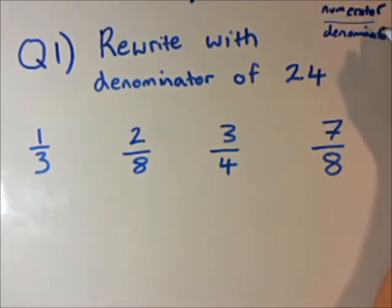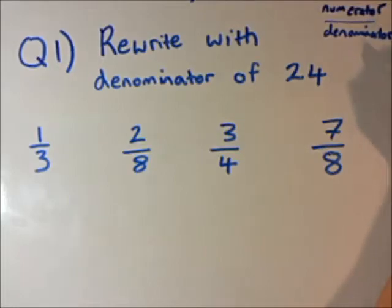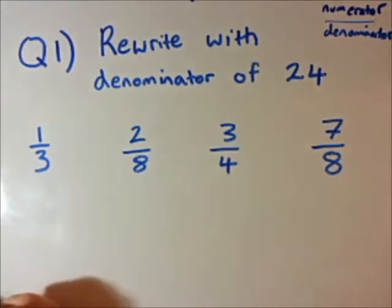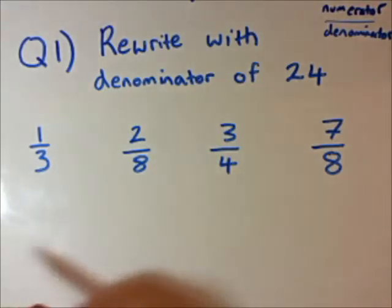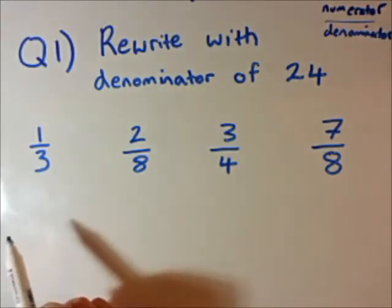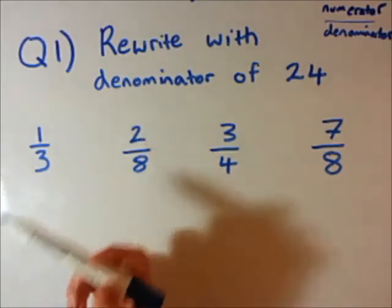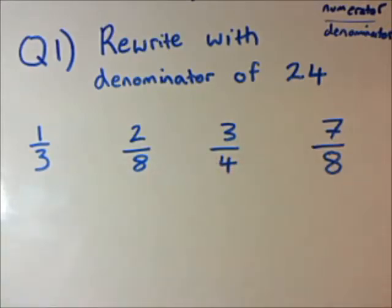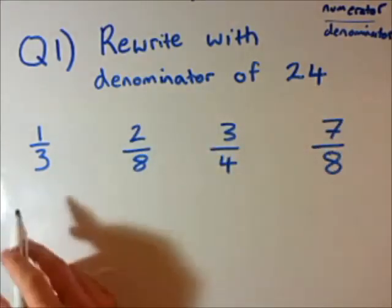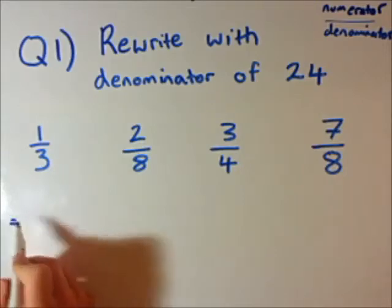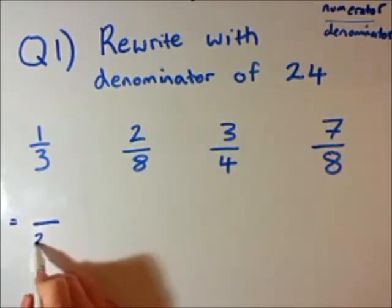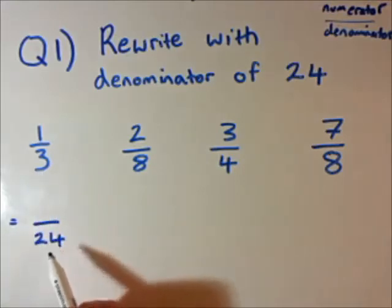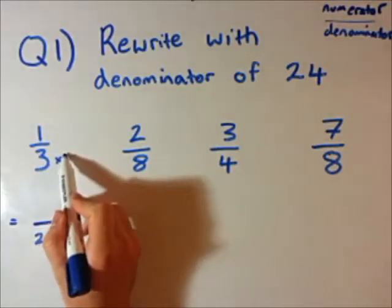I'll probably be calling it top and bottom or numerator and denominator. So we need to rewrite these fractions with a denominator of 24. The trick to these questions is whatever you do with the top, you need to also do with the bottom. And vice versa. So they're asking for a denominator of 24, so instead of 1 over 3, I need something over 24. What do I need to do to 3 to get 24?